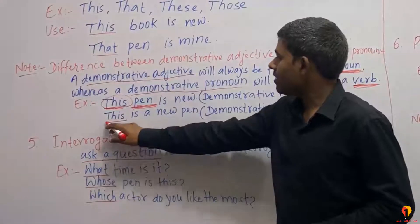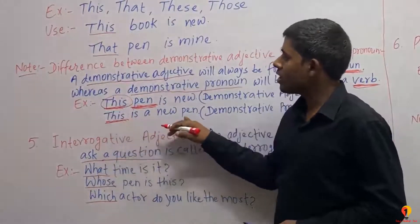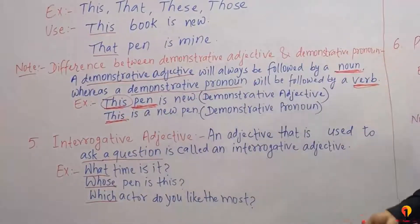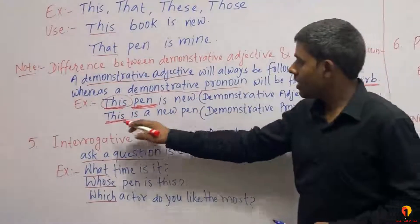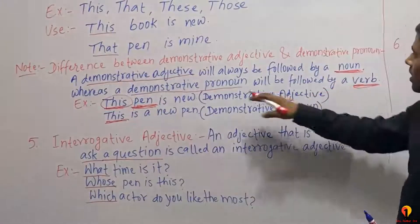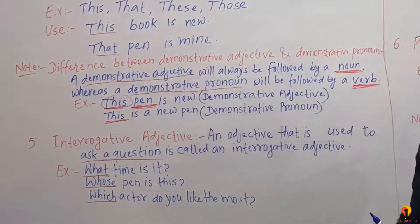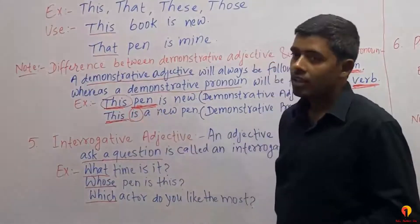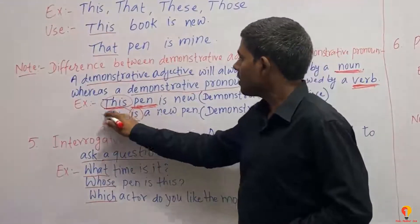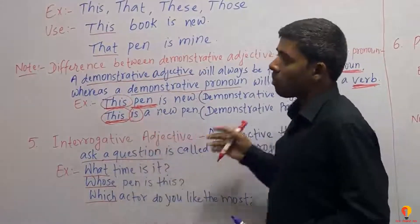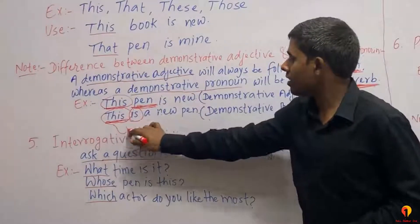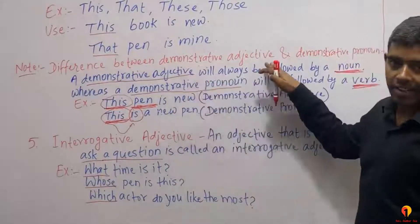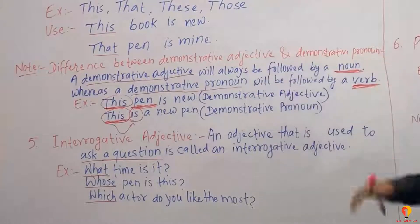If we are talking about the pen and 'this' is followed by the noun 'pen,' then we use a Demonstrative Adjective. This is the difference between Demonstrative Adjective and Demonstrative Pronouns.